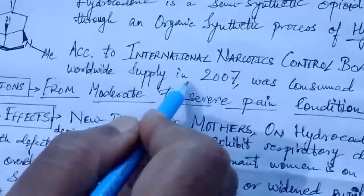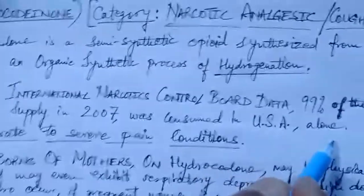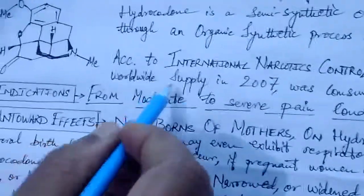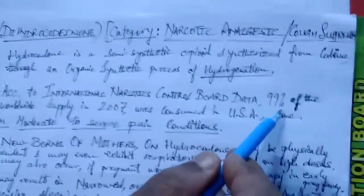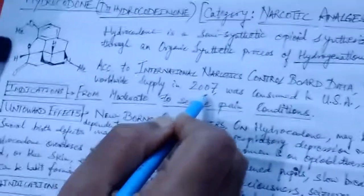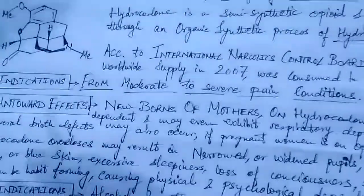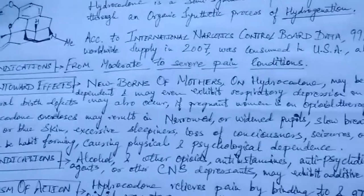According to International Narcotics Control Board data, 99% of the worldwide supply of hydrocodone in 2007 was consumed in the USA alone. This is a startling fact that highlights the extent of demand for this analgesic, especially in the US and North America.